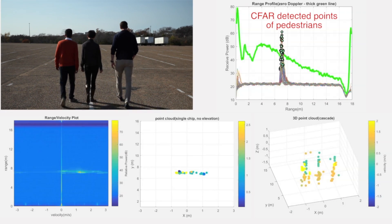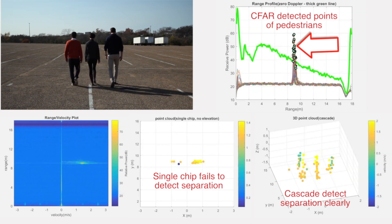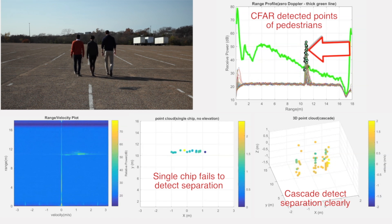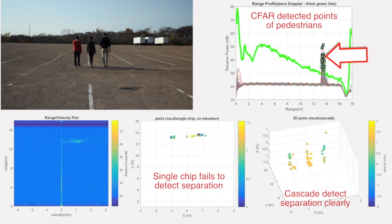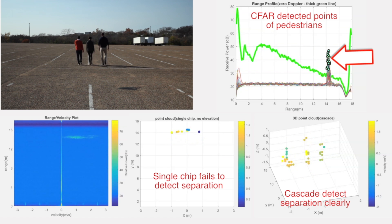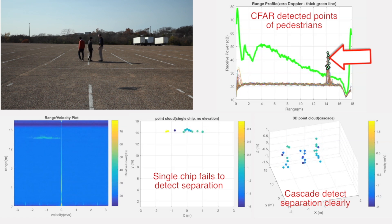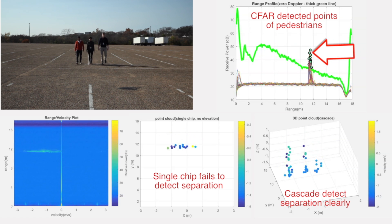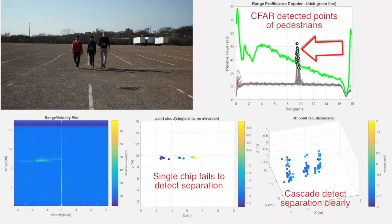In this demo, we demonstrate the high angle resolution for pedestrian detection. Three people are walking closely — this is a very challenging scenario to detect for a single-chip radar. We can see that the cascade radar is able to separate each person accurately due to its high angle resolution.